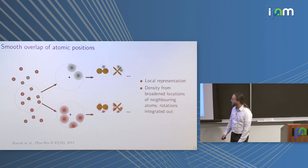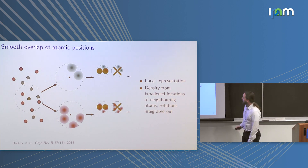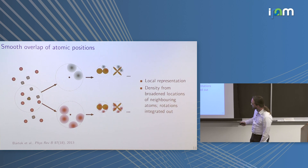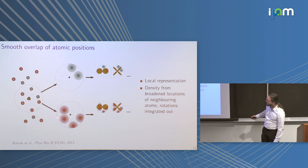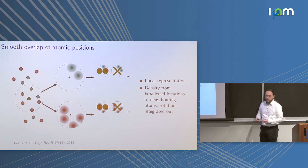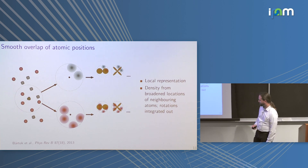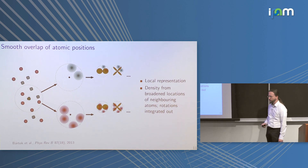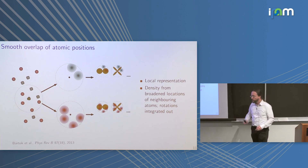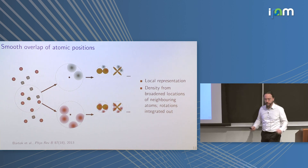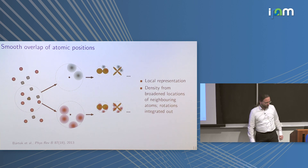The smooth overlap of atomic positions (SOAP), introduced by Gabor Csányi and co-workers, is again a local representation. You place Gaussians on atoms, choose a basis such as spherical harmonics, and integrate out rotations. For the actual descriptor you can compute a kernel or a power spectrum. It is another way to describe local environments, differing in the choice of basis functions.